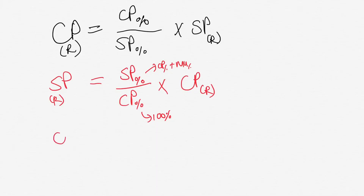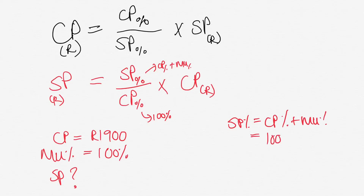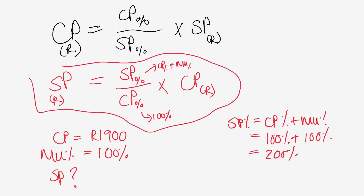Let's use another example from your cost price assignment from the first term. We have been given a cost price in rand terms of R1,900, and we have been told that the markup percentage is 100%. You've been asked to work out what the selling price in rands is. First, we have to work out what our selling price in percent is — it's your cost price plus your markup. Your cost price is always 100%, and your markup is also 100%. That's quite a hefty markup, so your selling price is 200% of the cost price.